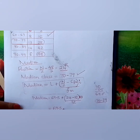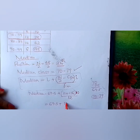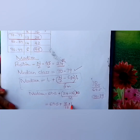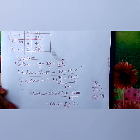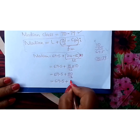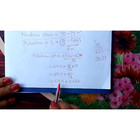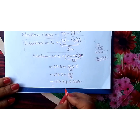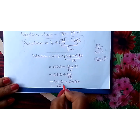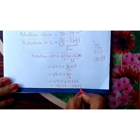So we calculate: 69.5 plus (24 minus 16) over 12, times 10. That is 69.5 plus 8 over 12 times 10. 8 divided by 12 gives 0.6667 recurring. So 69.5 plus 6.67 gives us 76.17 to four significant figures.